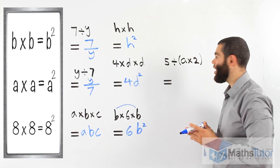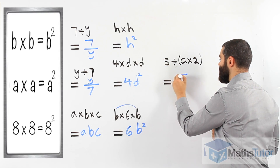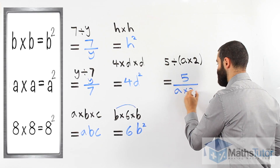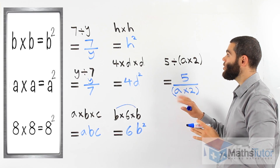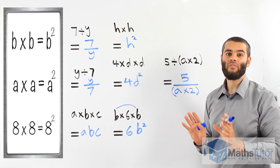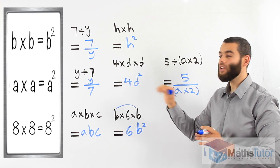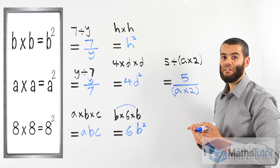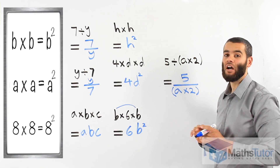Here we have 5 divided by everything in the bracket, which is A times 2. 5 comes first as our numerator, division is the fraction bar, and A times 2 is our denominator. So 5 divided by (A times 2) is written as 5 over (A times 2). If you follow the rules, it is simple — algebra is about simplifying things. In mathematics, we like to make things as simple as possible. Apply these rules of algebra from now throughout high school and you'll find algebra smooth and very easy. Make sure you master these right now.